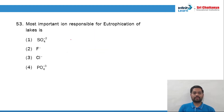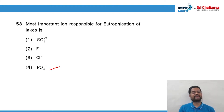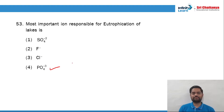Proceeding further, question 53: the most important ion responsible for eutrophication of the lakes is phosphate ion or nitrate ion? Phosphate is given, so that should be the answer. So 53 is that.